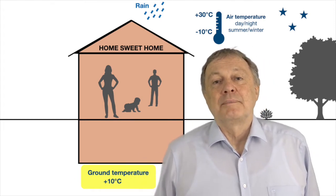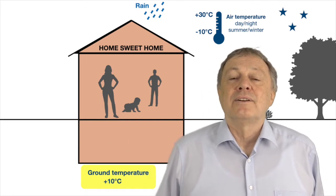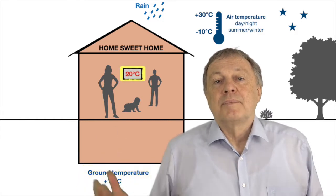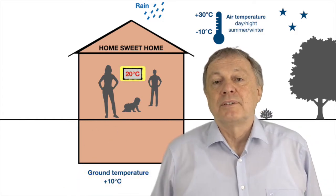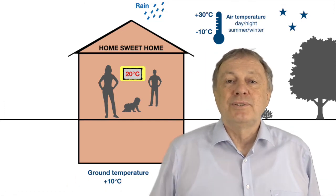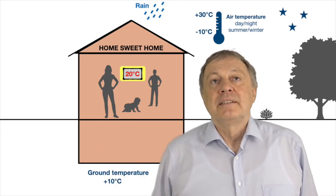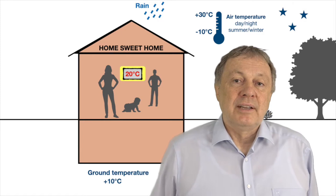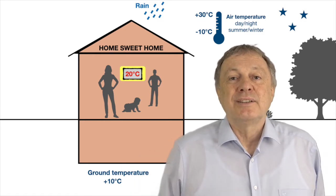Your house becomes hot or cold from the outside air, and it always becomes a little bit cold from below. To have a cozy, pleasant home you want a temperature of about 20 degrees Celsius — you might want it a bit warmer or colder depending on what you do, but most importantly in winter you don't want to be freezing cold in your home.